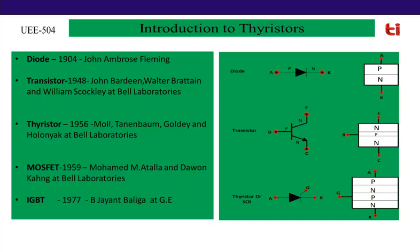In the year 1956, the thyristor came to market. The difference between transistor and thyristor is that a transistor is a 3-layer device, but a thyristor is a 4-layer device. Both are 3-terminal controlled devices. In the case of a transistor, if base current is available, the transistor will conduct. In the case of a thyristor, if gate current is available, the thyristor will conduct.